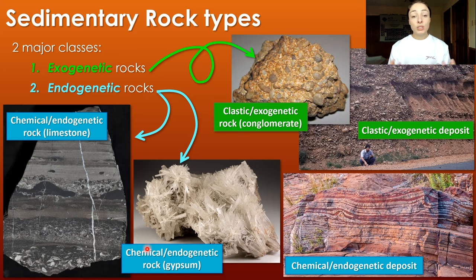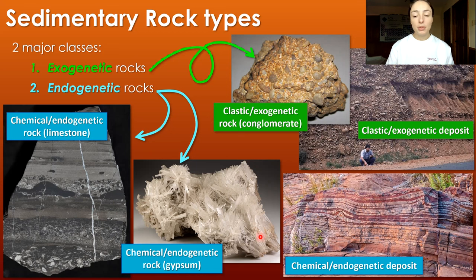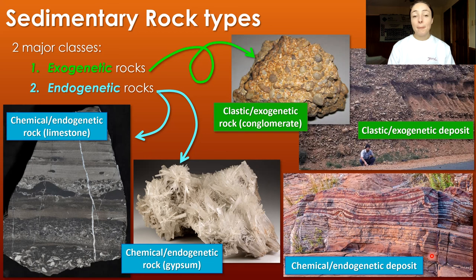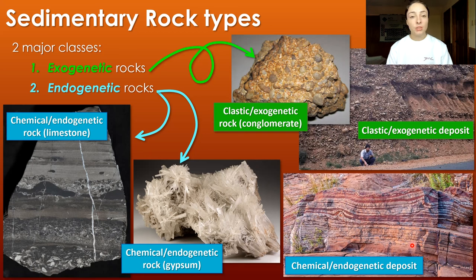Endogenetic rocks — those that form in the place they accumulate — are things like gypsum or rock salt, any sort of evaporite deposit, and many carbonates like limestone, though sometimes limestone can be detrital. Other chemical precipitating minerals include iron hydroxides, manganese oxide, and sometimes silica in the form of chert, which can precipitate from solution.